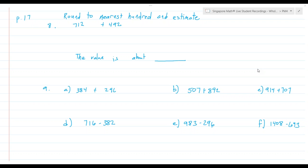Sometimes in math, most of the time in math, we want to have an exact answer. If we say 712 plus 492, we want to get the exact number of that problem and say that is 1204.